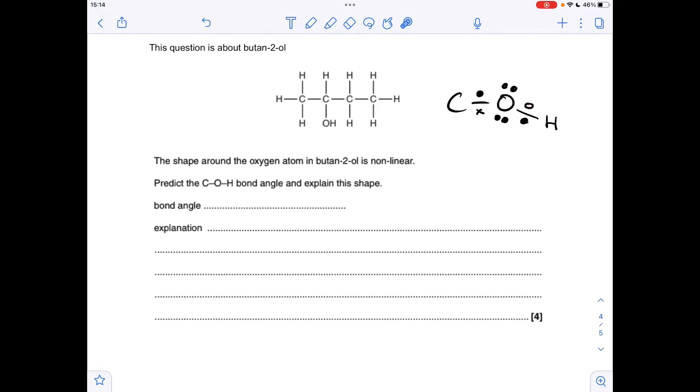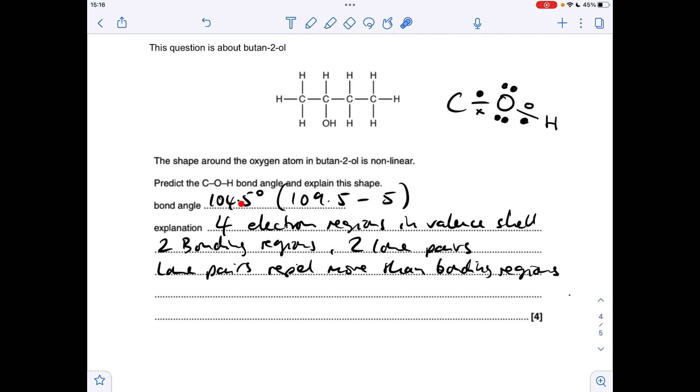Oxygen is in group 6, so we've got six valence electrons. So we've talked about two, so obviously two lone pairs. So we'll do the explanation first. So we've got four electron regions in the valence shell: one, two, three, four. Two bonding regions, two lone pairs. And we need to say that lone pairs repel more than bonding regions. So the starting angle is going to be 109.5 degrees. But each lone pair will take two and a half degrees off that. So we need to take five off the angle, which means the bond angle is going to be 104.5 degrees.